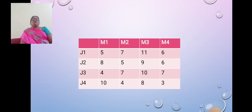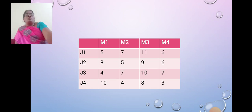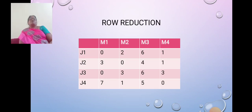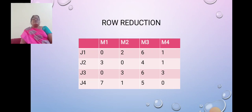In the third row, the minimum value is 4. We need to subtract the minimum value from the J3 row. The minimum value in the fourth row is 3; we need to subtract 3 from J4. After subtraction, we get the result displayed on the screen.